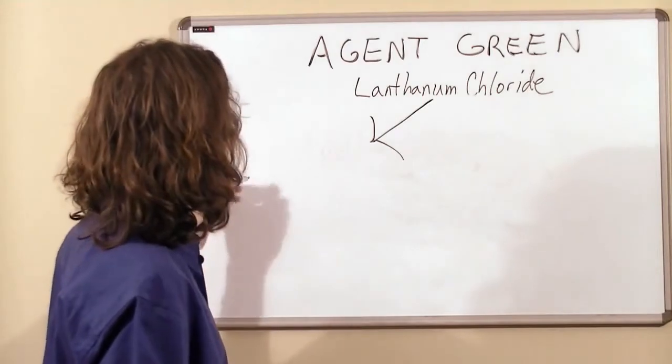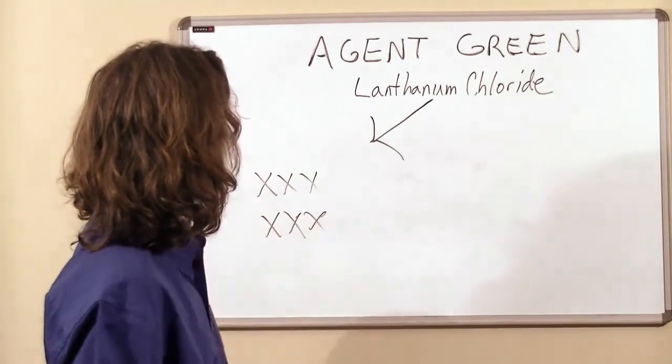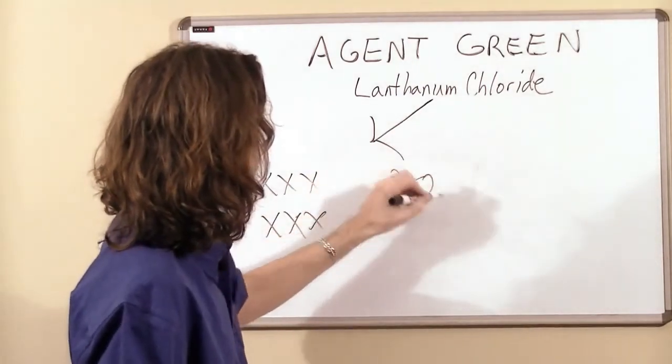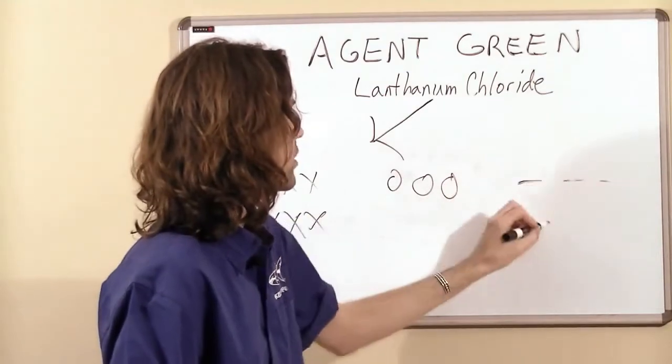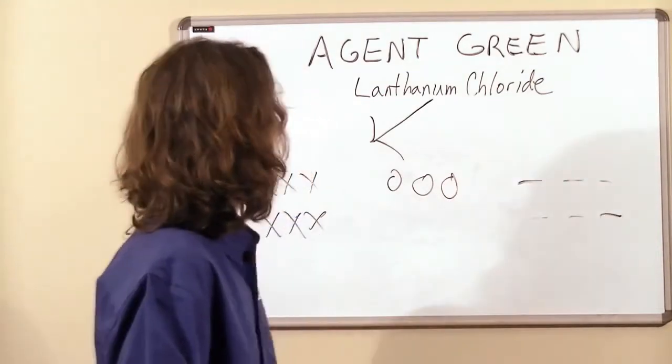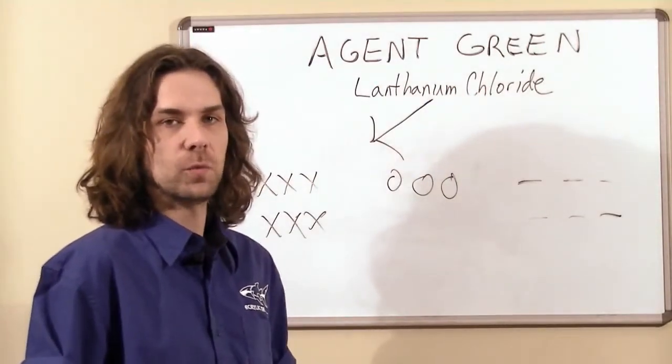So let's take your dose of lanthanum chloride. Let's make that X's. And then we're going to have your calcium. We're going to make those O's. And then we're going to have your phosphate. Let's make those dashes. Now, if you don't have enough calcium, you're not going to get as much phosphate out as you want.